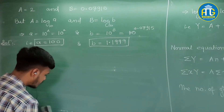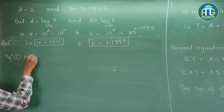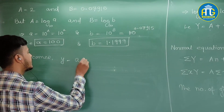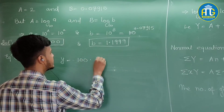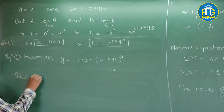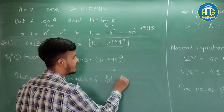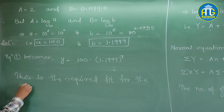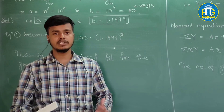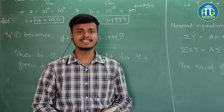Equation 1 becomes: y = 100 × (1.139)^x. This is the required best fit curve for the given data. I hope everything covered in this learning video is clear to you. For any doubts or queries, feel free to contact. Thank you for watching this learning video and enjoy learning mathematics.